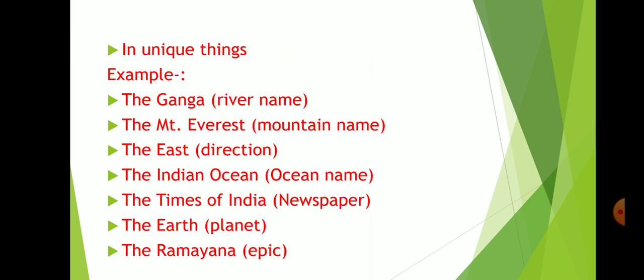Now children, next, in unique things. For example, the Ganga is the river name. The Mount Everest, that is the mountain name. The East, that is the direction.